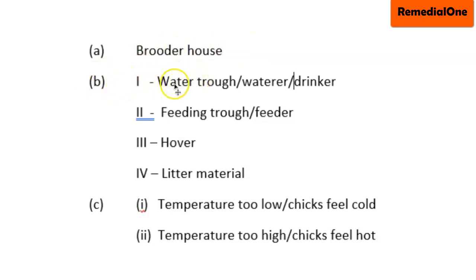Question B: We are supposed to name the parts labeled. Part I is water trough, or we can say waterer or drinker. Part II is feeding trough, or you can say feeder. Part III is hover. Then the part labeled IV is litter material or straw material.